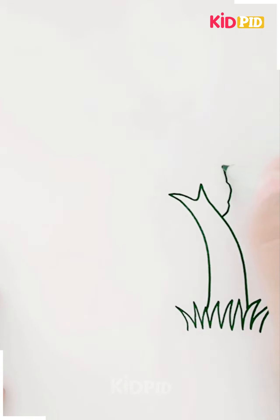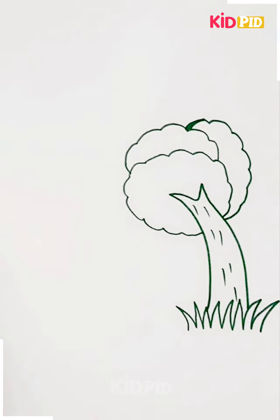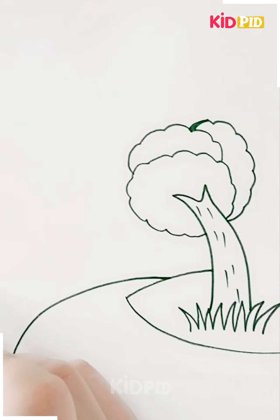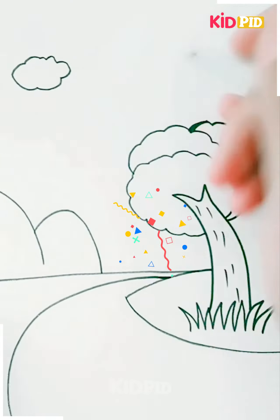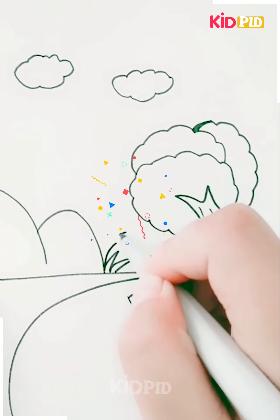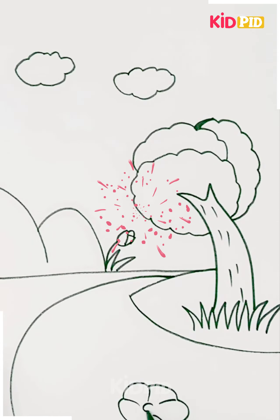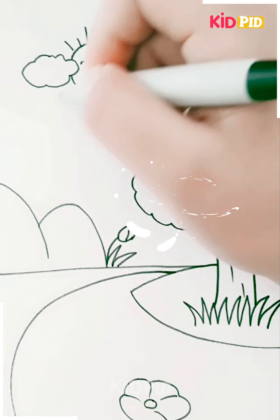Moving on to the next diagram, I'm drawing grasses and the branches of trees. Then I'm drawing one more road type, small clouds, grasses and flowers. A different flower has been drawn between the two clouds, and there's a sunny warming.